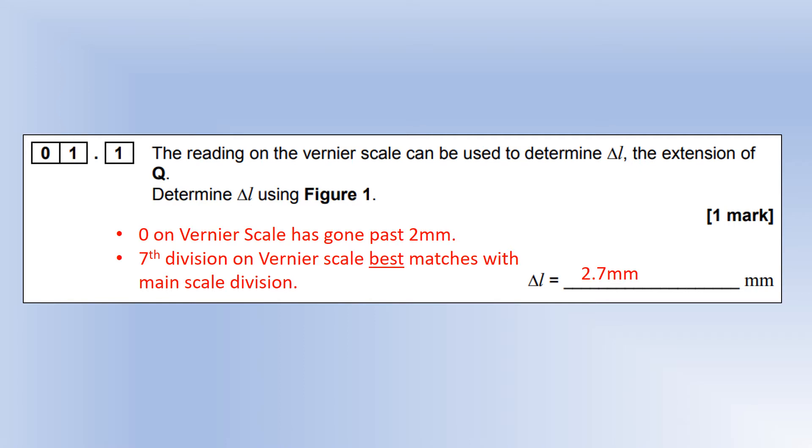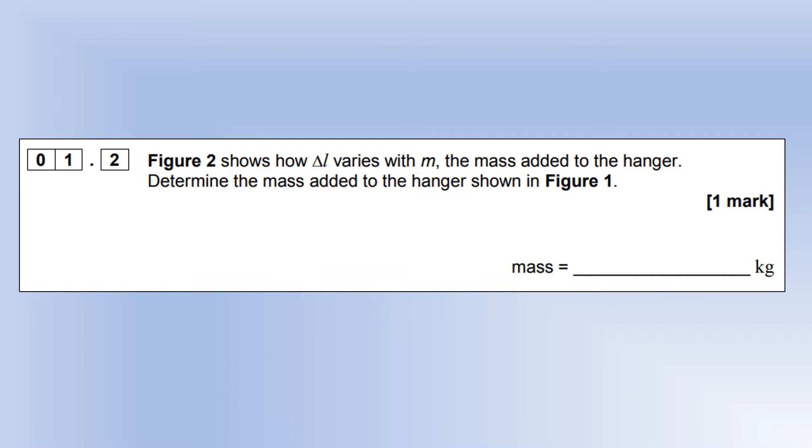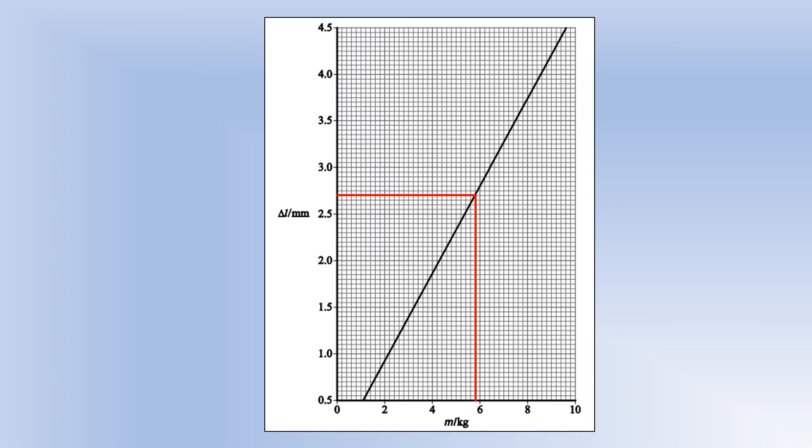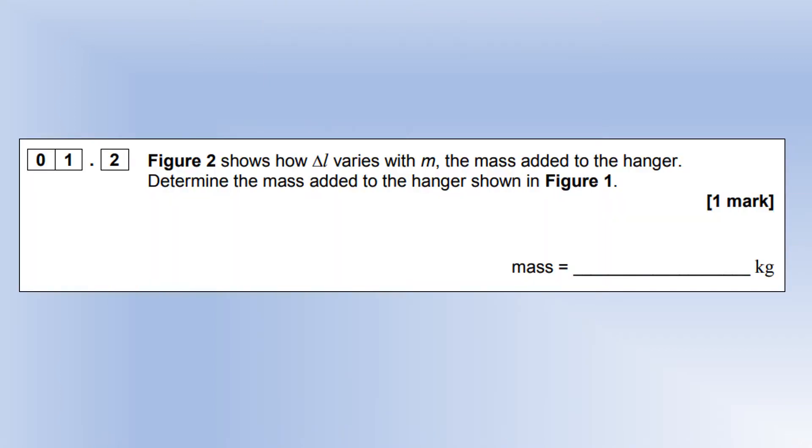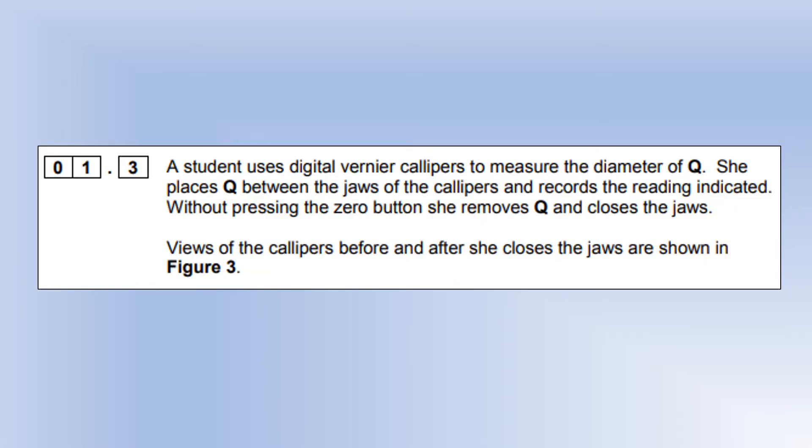Moving on to question two, we've got a graph showing how delta L varies with m. We're going to use it to determine the mass for the delta L we just found out. The delta L was 2.7, so we just read across, read down, and we can see it's 5.8 kilograms.